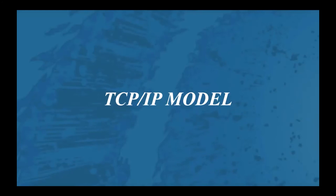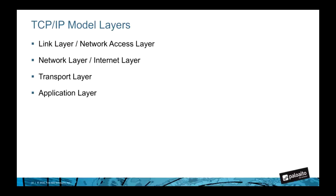The Internet Protocol Suite is another model to help explain network communication, more commonly known as the TCP/IP model because the original protocols were TCP — Transmission Control Protocol — and IP — Internet Protocol. It's also sometimes known as the Department of Defense model or DoD model, because development was funded through DARPA. The TCP/IP model consists of four layers: the link layer, the network or internet layer, the transport layer, and the application layer.